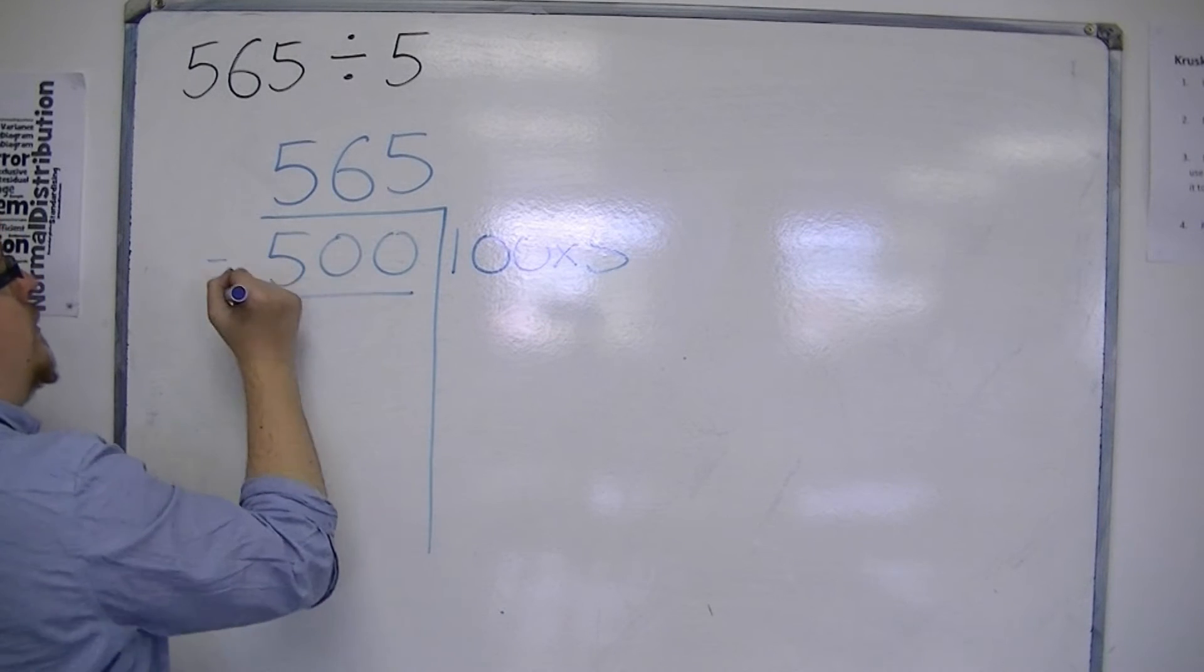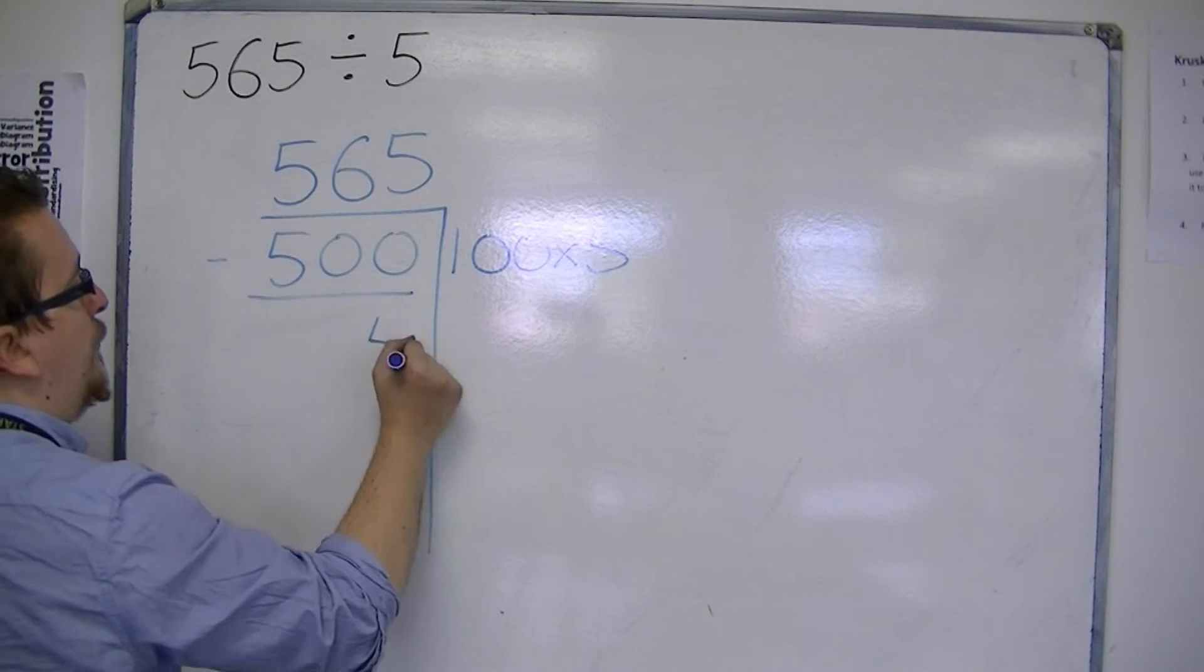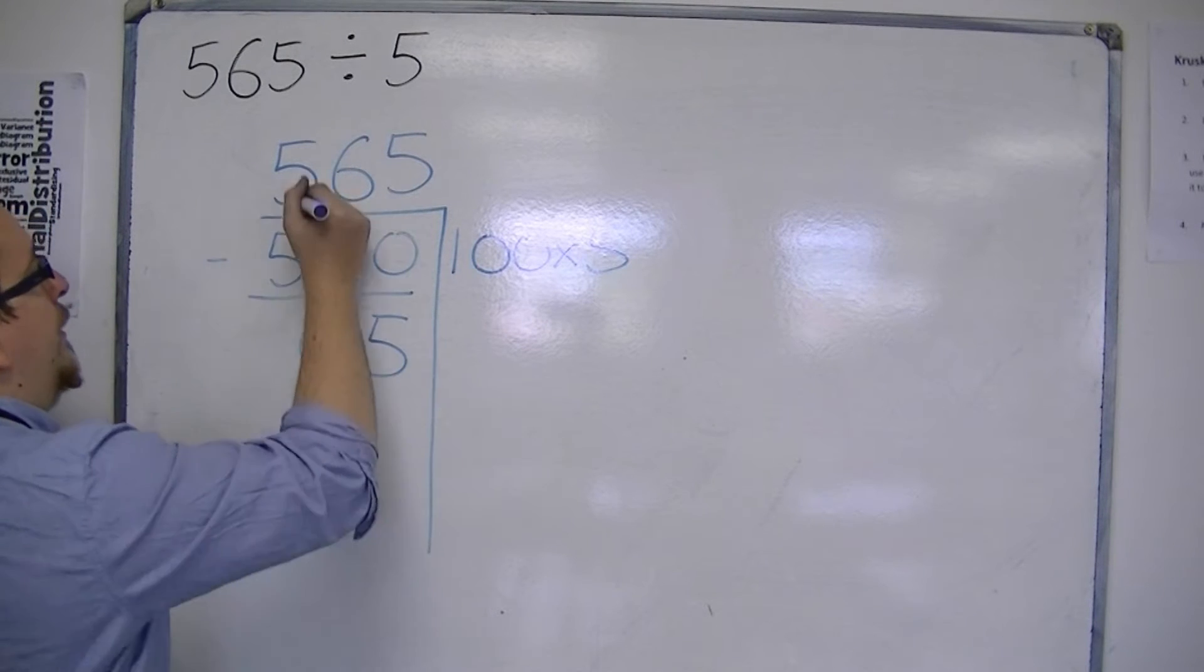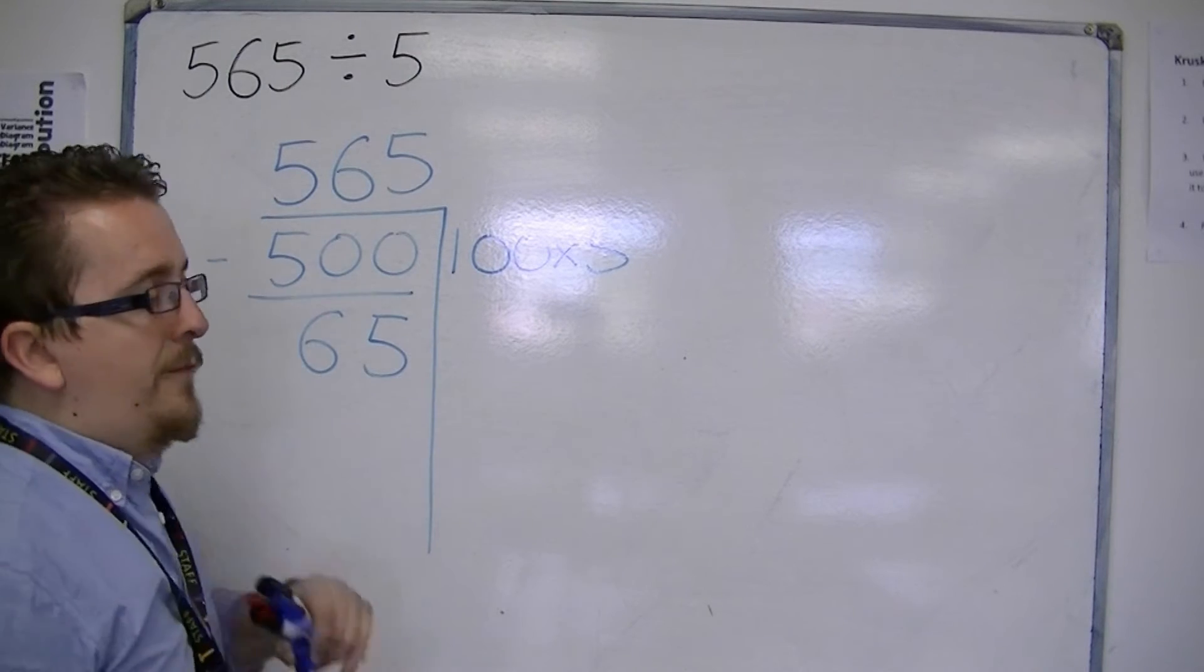And now I do a subtraction. 565 take away 500. 5 take away 0 is 5. 6 take away 0 is 6. 5 take away 5 is 0. I'm left with a 65.